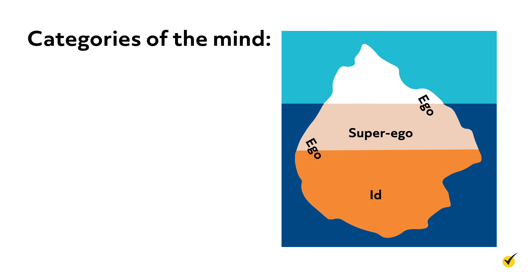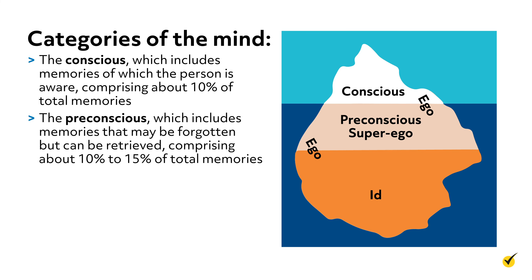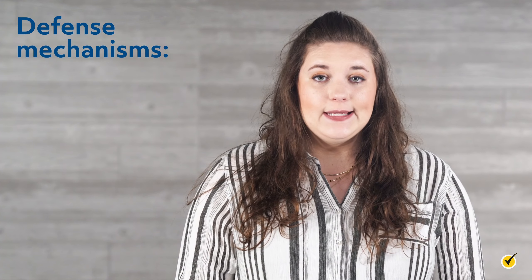Freud also described the mind as composed of three categories. The conscious, which includes memories of which the person is aware, comprising about 10% of total memories. The pre-conscious, which includes memories that may be forgotten but can be retrieved, comprising about 10 to 15% of total memories. And the unconscious, which includes all memories that cannot be easily retrieved because they are not important, are unpleasant, or are repressed, comprising 75 to 80% of total memories.